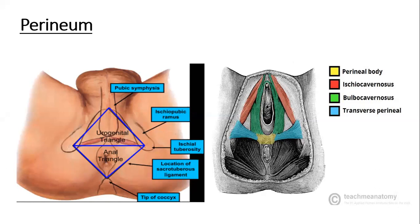The perineum is a shallow compartment of the body. It is bounded between the pelvic cavity and the pelvic outlet, and is separated from the pelvic cavity by the fascia covering the inferior aspect of the pelvic diaphragm, which is formed by the levator ani and coccygeus muscles.